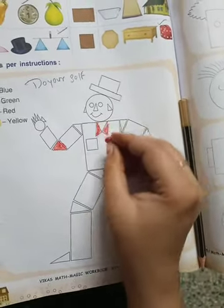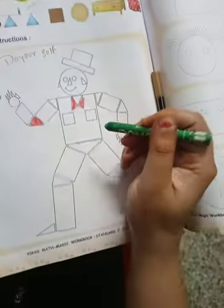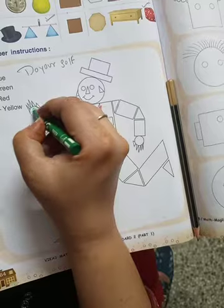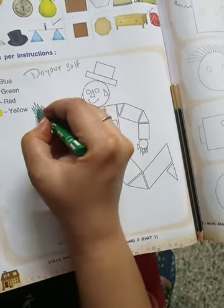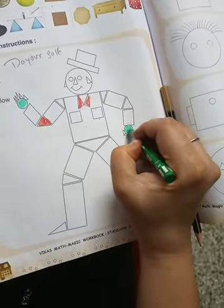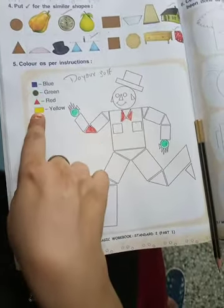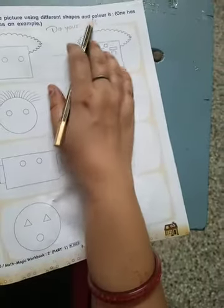Here we have to use green color circle. We will do green color. Here also we have to do green color. Here you can complete the picture using different shapes and color.